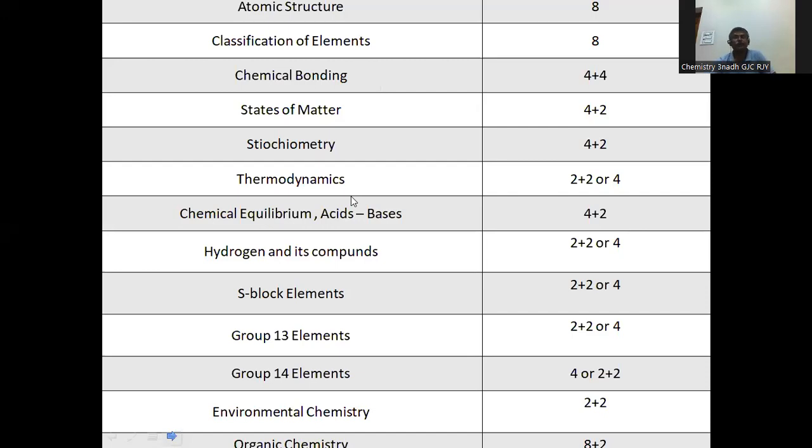The tentative weightage for this chapter, chemical equilibrium acid-base topic, is 4 plus 2 weightage. So we need one four marks question, one short answer question, and one very short answer question.